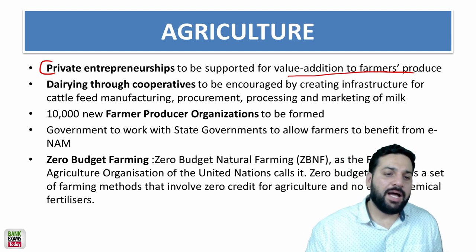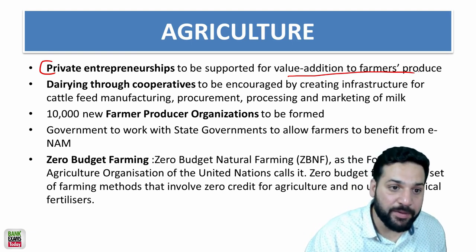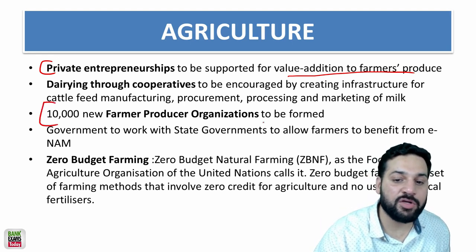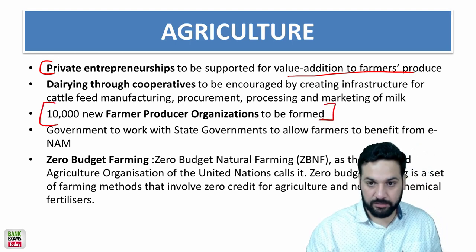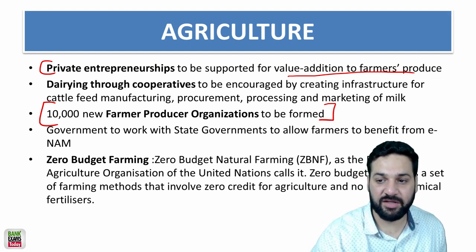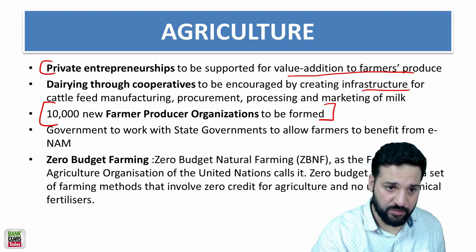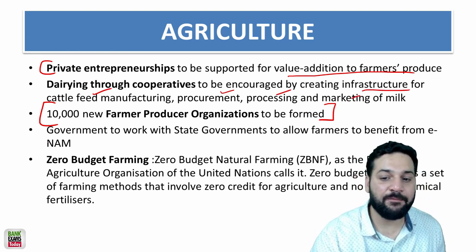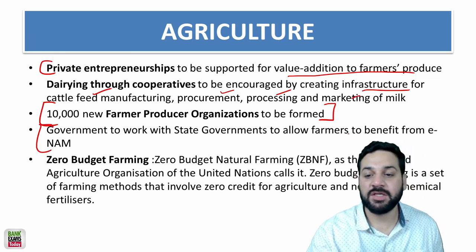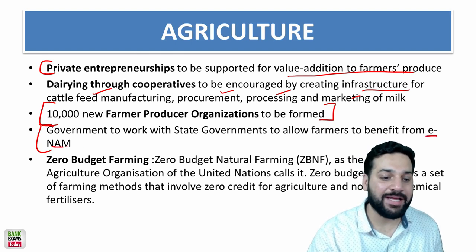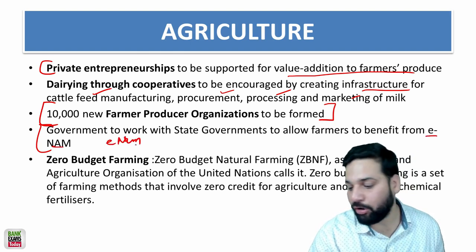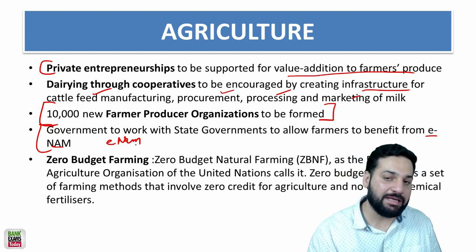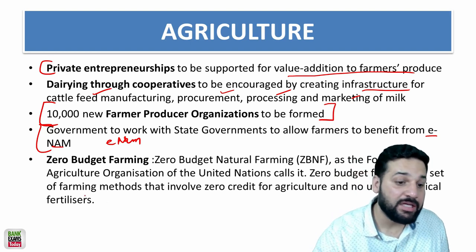In agriculture, private entrepreneurship will be supported for value addition to farmer produce. Through cooperatives, 10,000 new Farmer Producer Organizations are to be formed, with infrastructure for cattle feed manufacturing, procurement, processing, and marketing of milk. The government will also work with farmers to benefit from eNAM — the online trading platform for agricultural commodities.